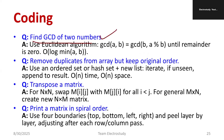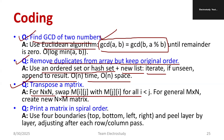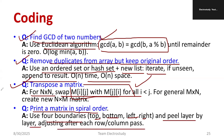Find GCD of two numbers using the Euclidean algorithm — study what it is and use it to compute GCD. To remove duplicates from an array but keep the original order, use an ordered set or hash set, then create a new list, iterate, and if unseen append to the list. For the transpose of an N×N matrix, swap elements in place. To print a matrix in spiral order, use four boundaries — top, bottom, left, right — and peel layer by layer, adjusting after each row and column.